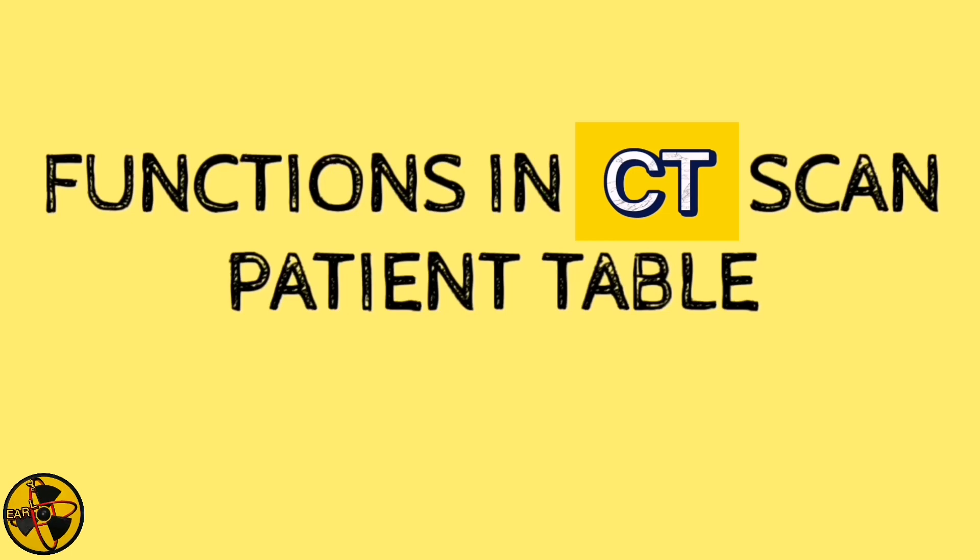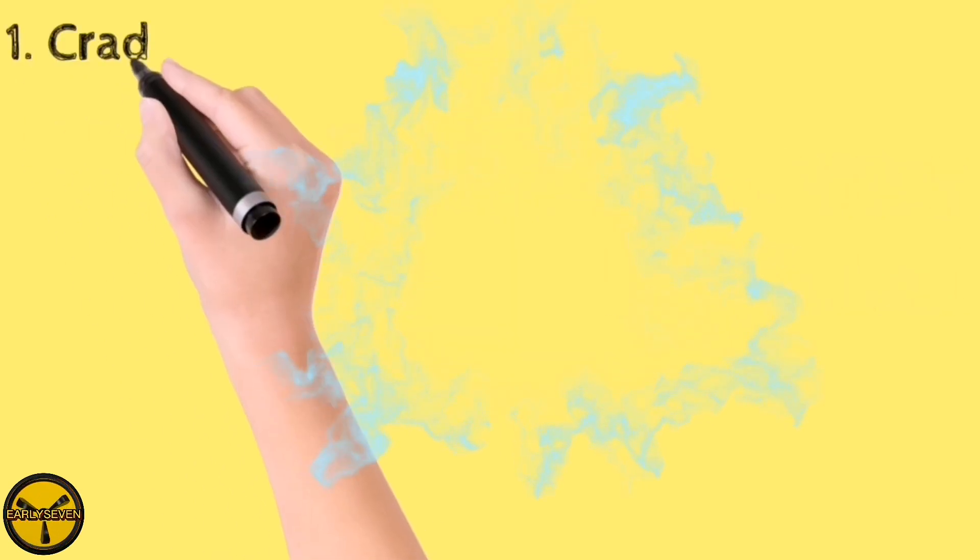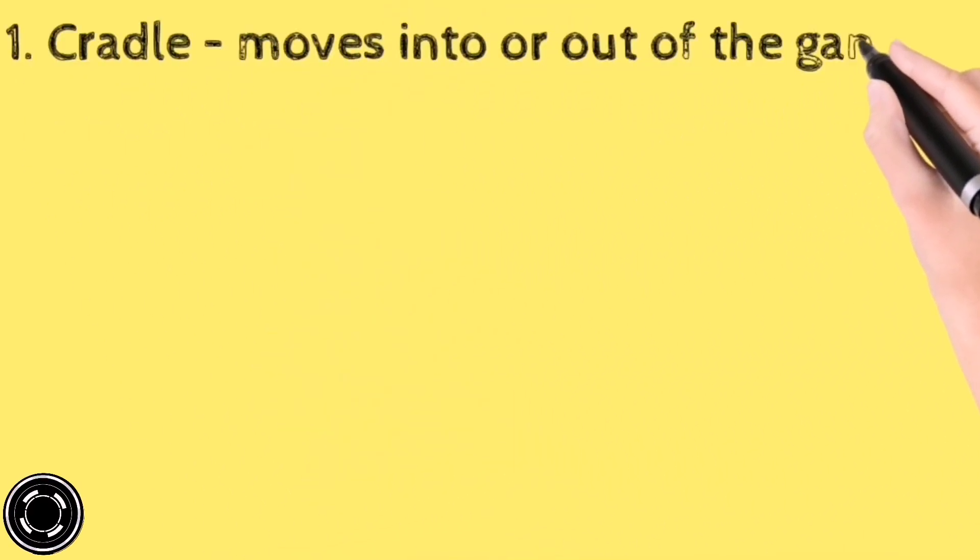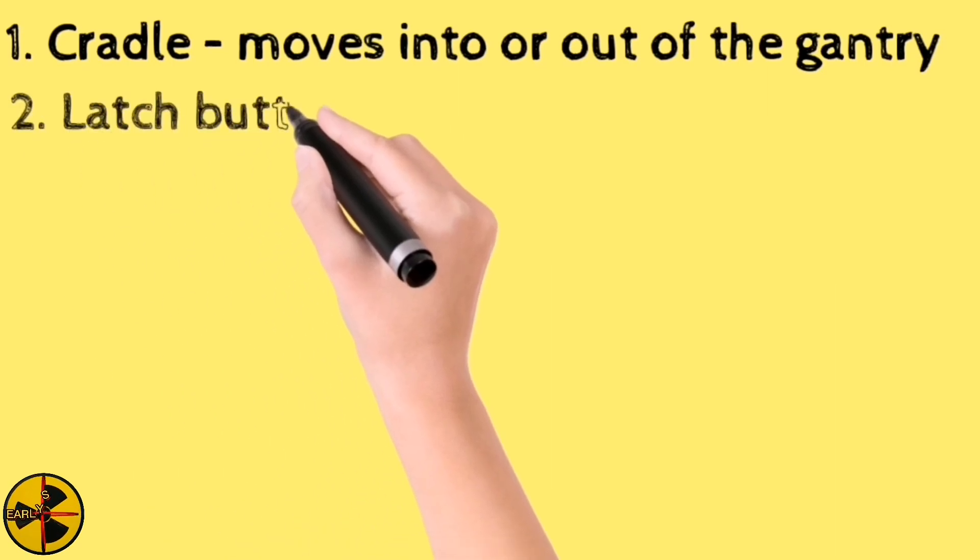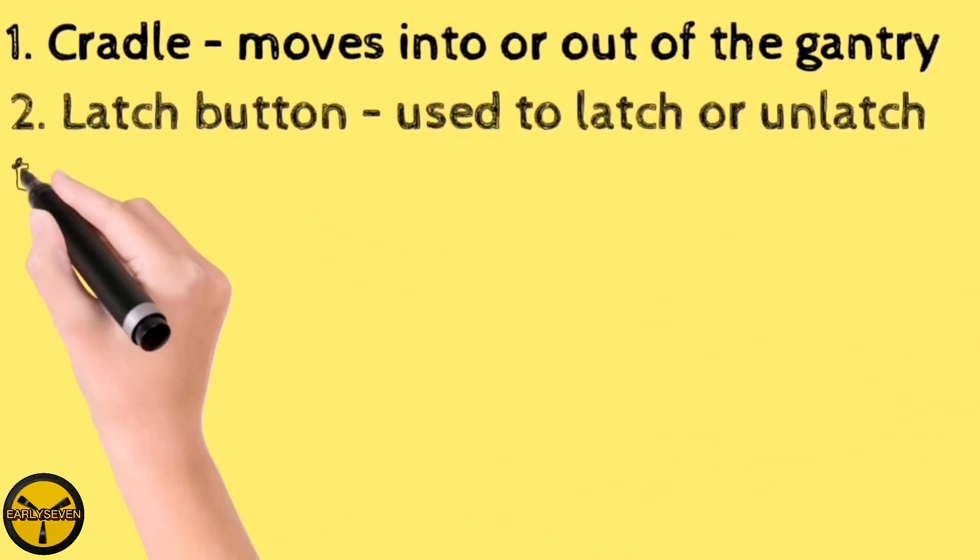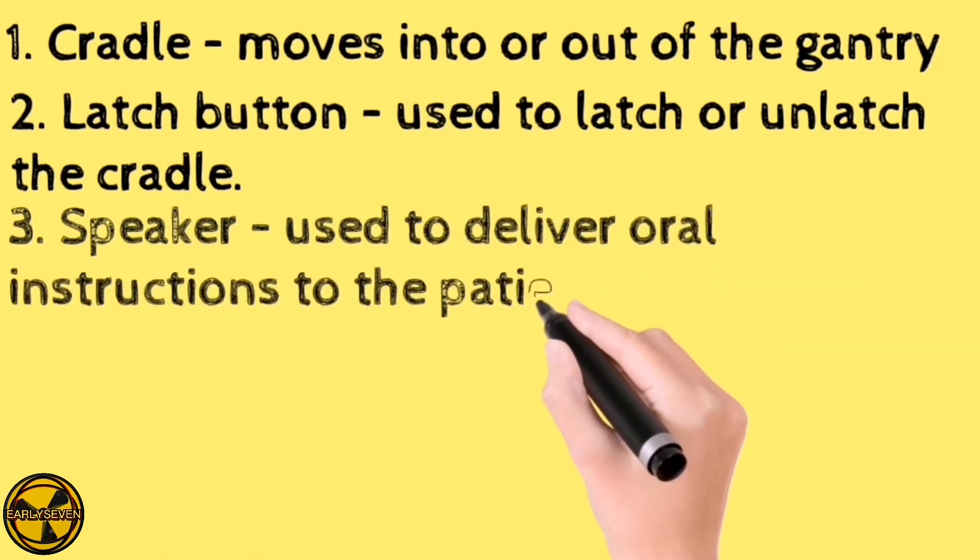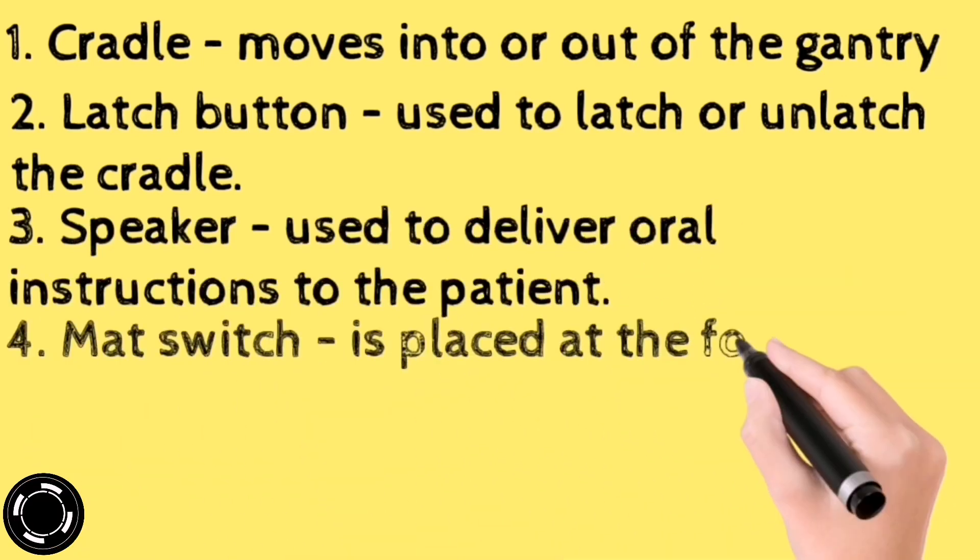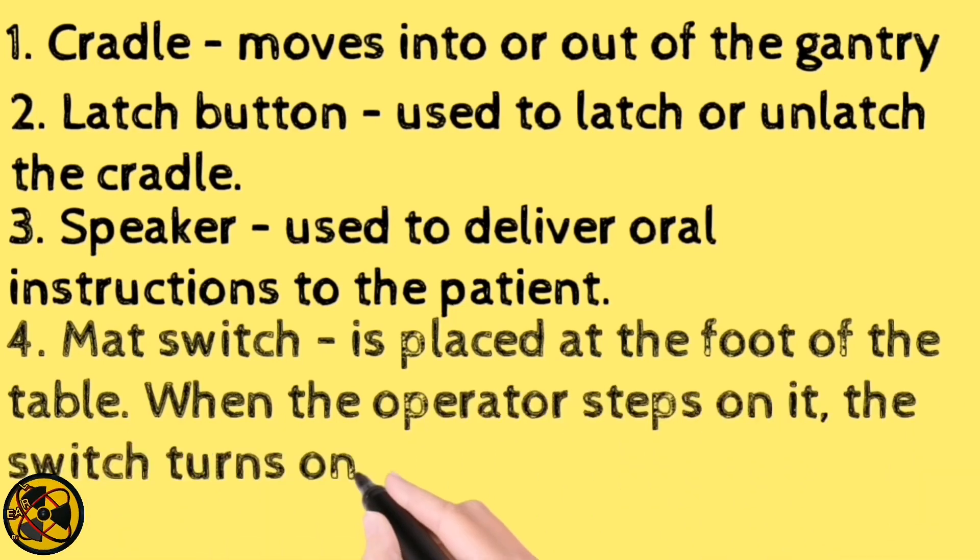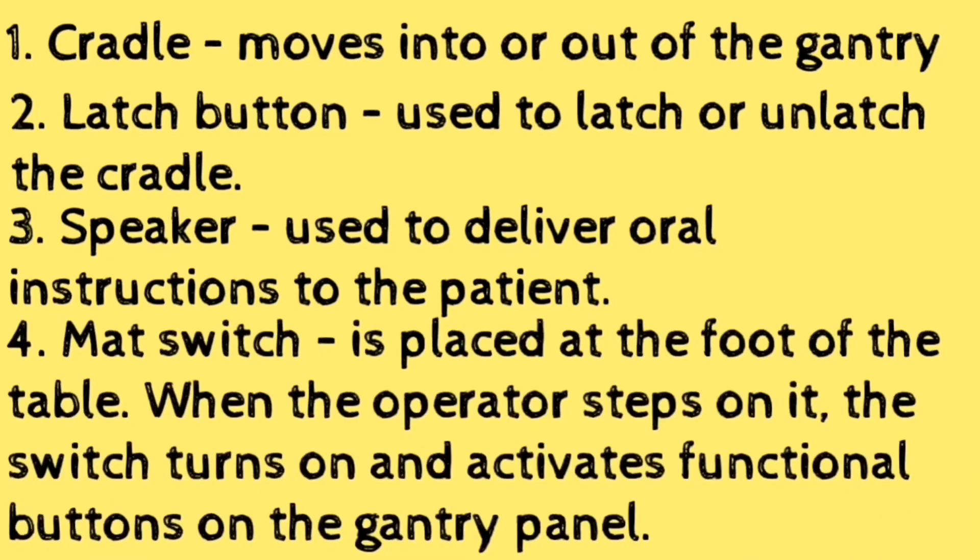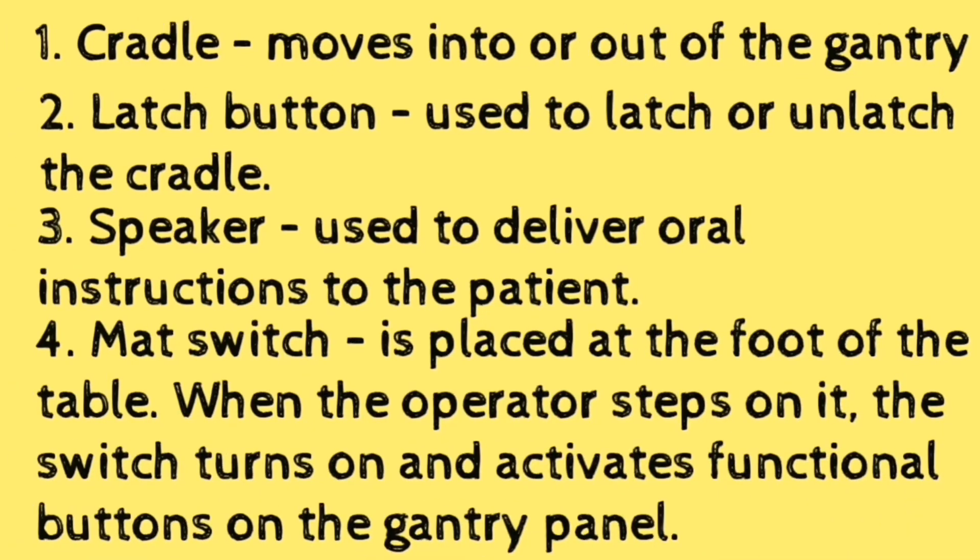What are the functions in a CT scan patient's table? The cradle moves into or out of the gantry. The latch button is used to latch or unlatch the cradle. Next is the speaker, which is used to deliver oral instructions to the patient. In the mat switch, that is placed at the foot of the table. When the operator steps on it, the switch turns on and activates functional buttons on the gantry panel.